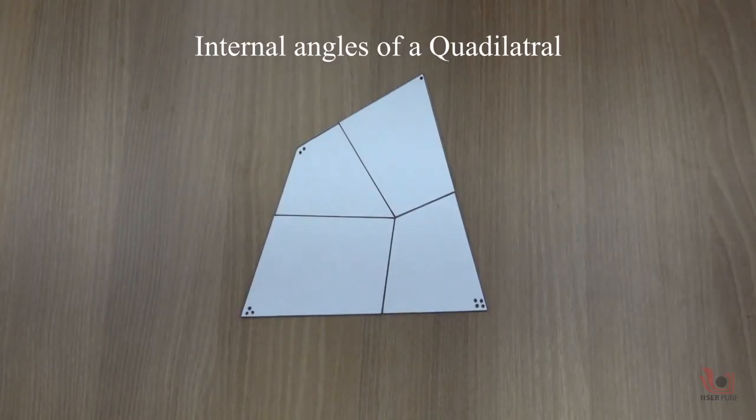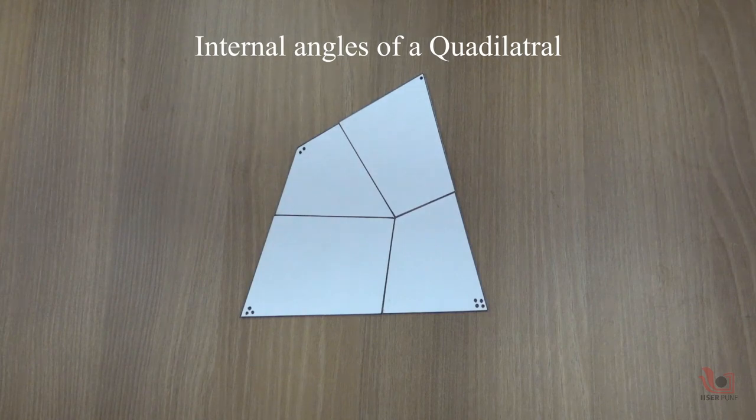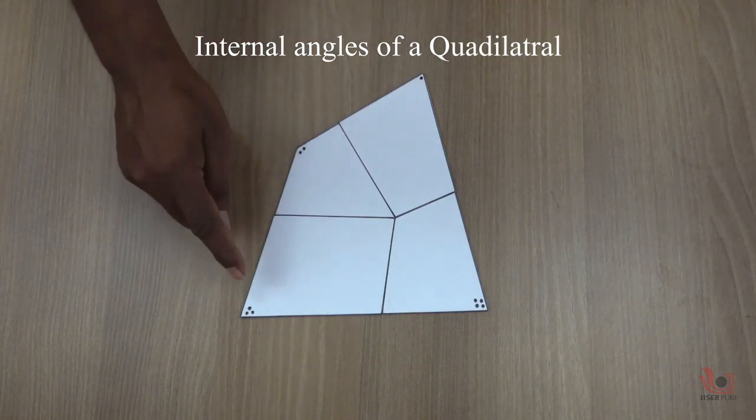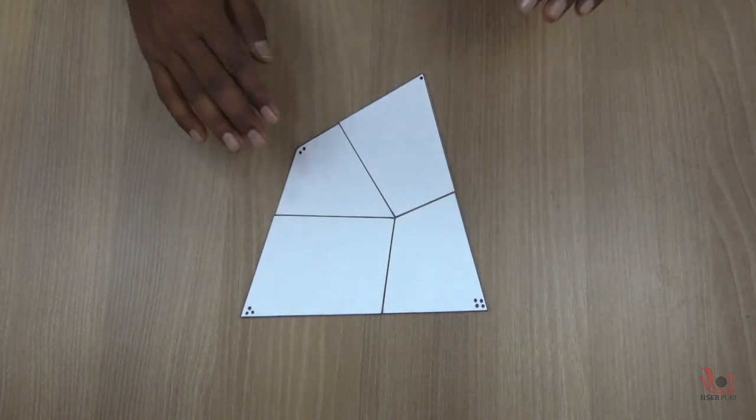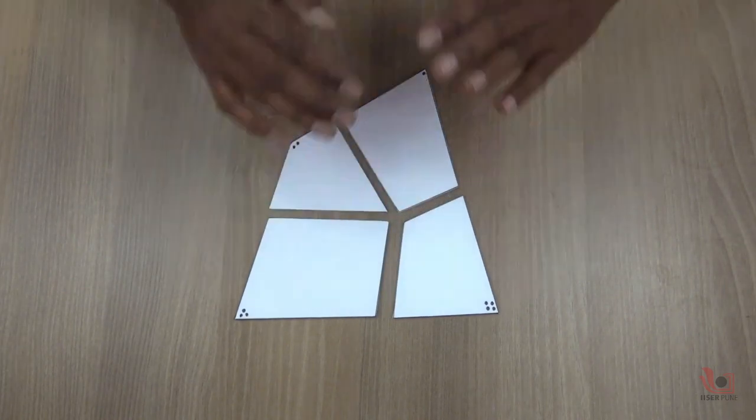Now, next we have to prove the sum of the internal angles of the quadrilateral is 360 degrees. The dots on the internal angles of the quadrilateral have been marked here.